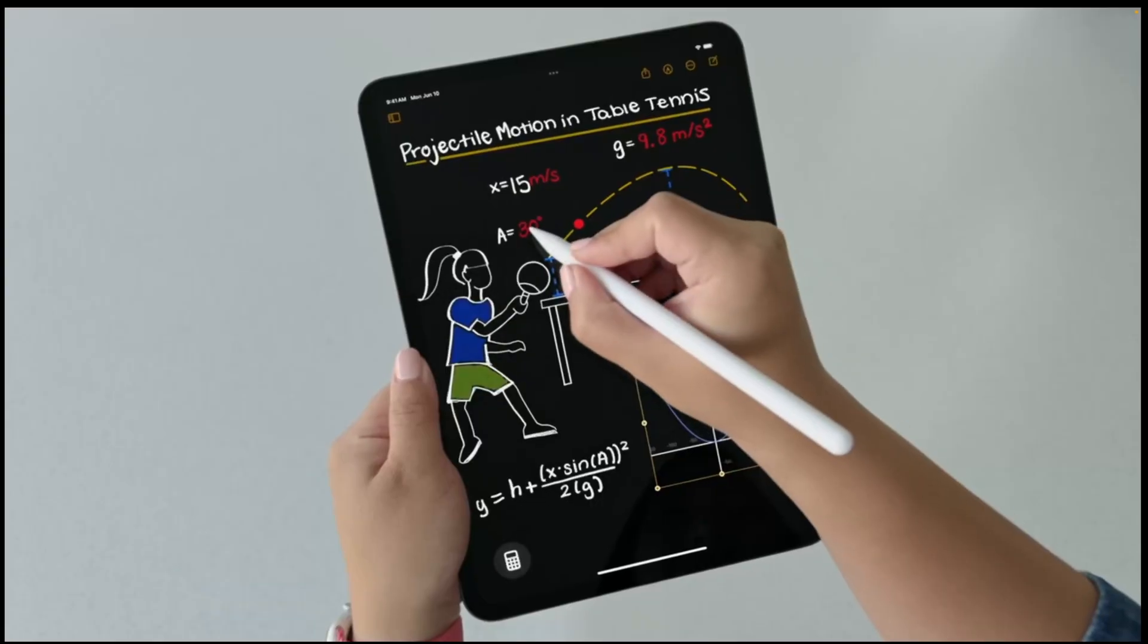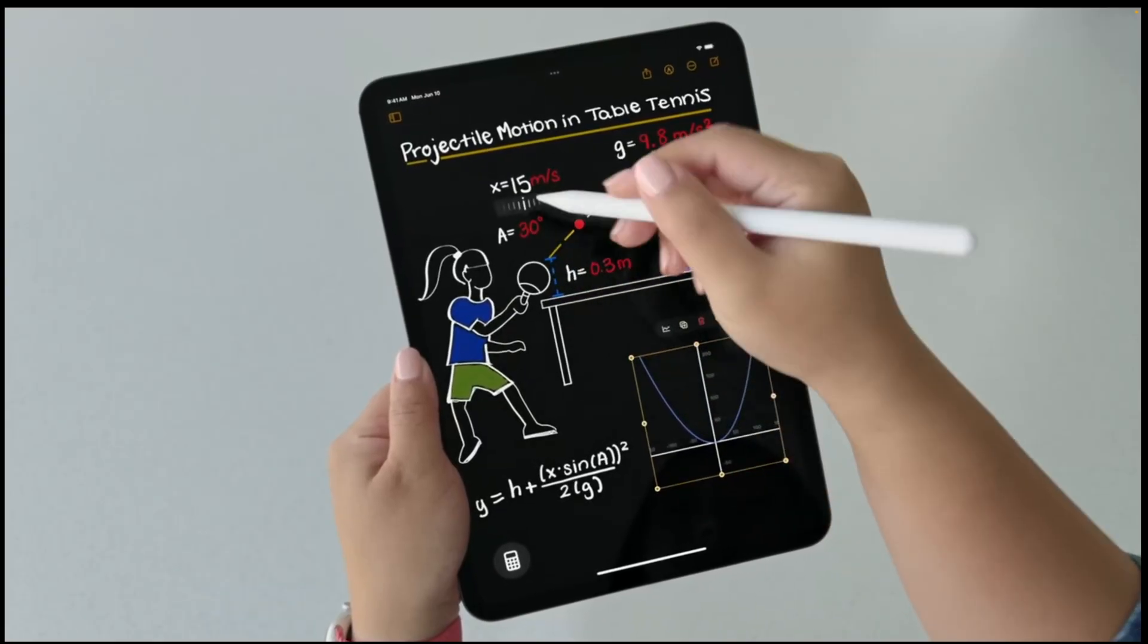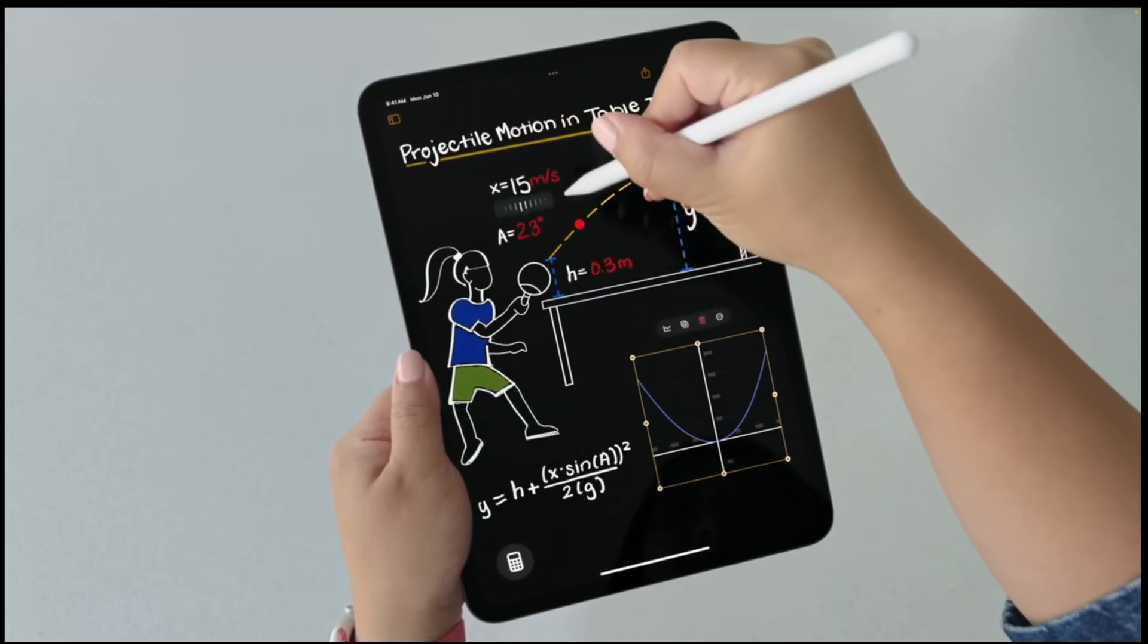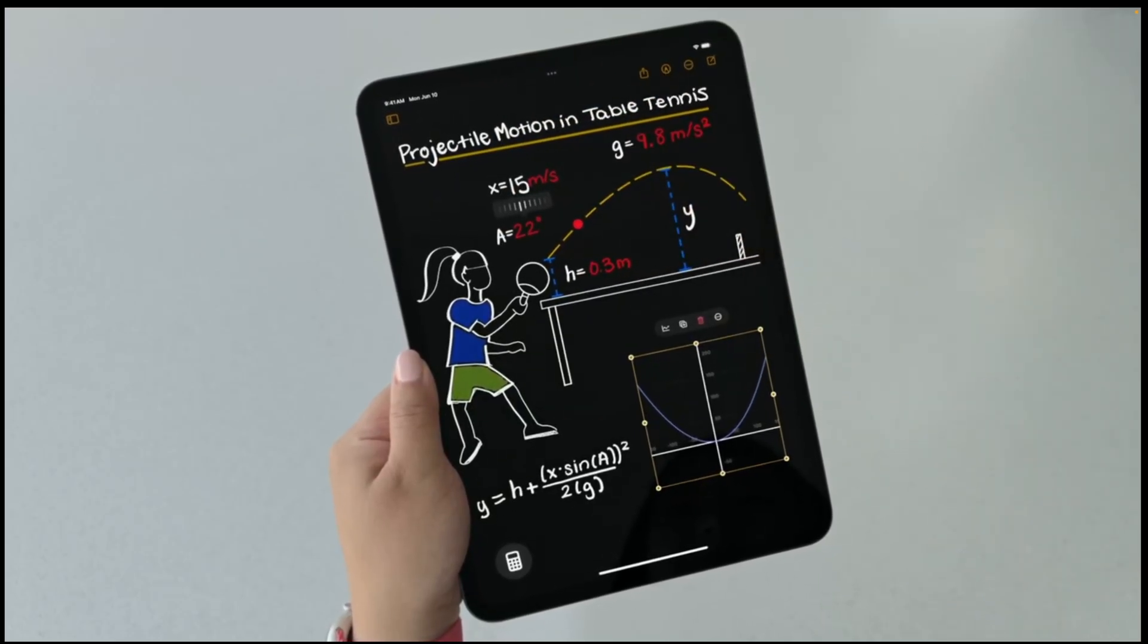And if I'm curious how the height will be impacted by the angle of my shot, I can hover my pencil over the angle and adjust it to see how it affects my graph in real time. It's an easy way to explore equations in math. And that's just a quick look at Math Notes in Calculator.